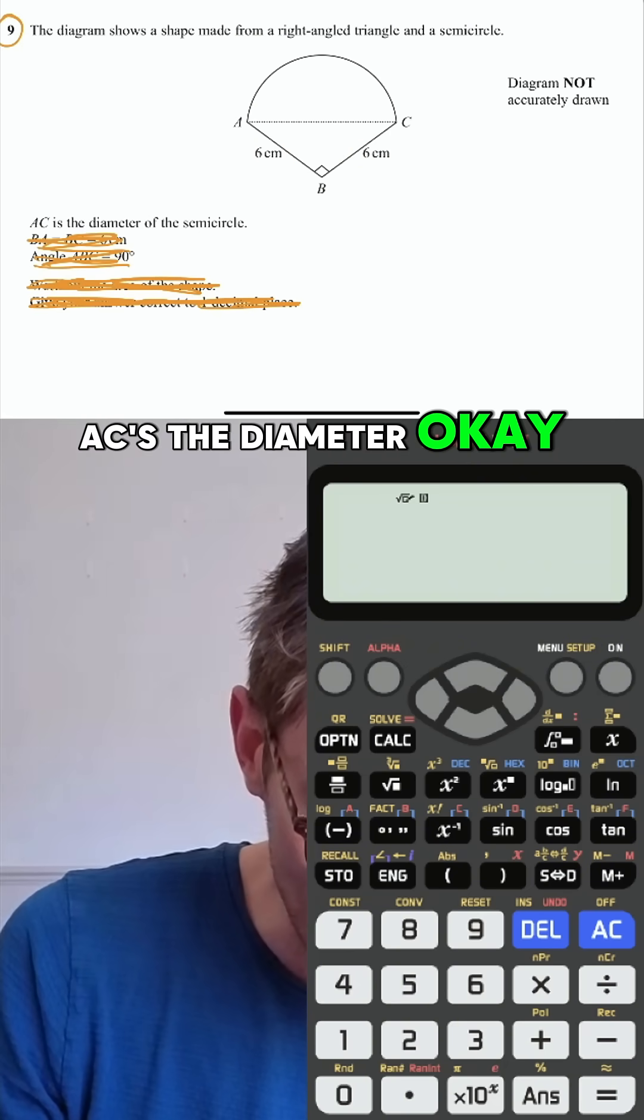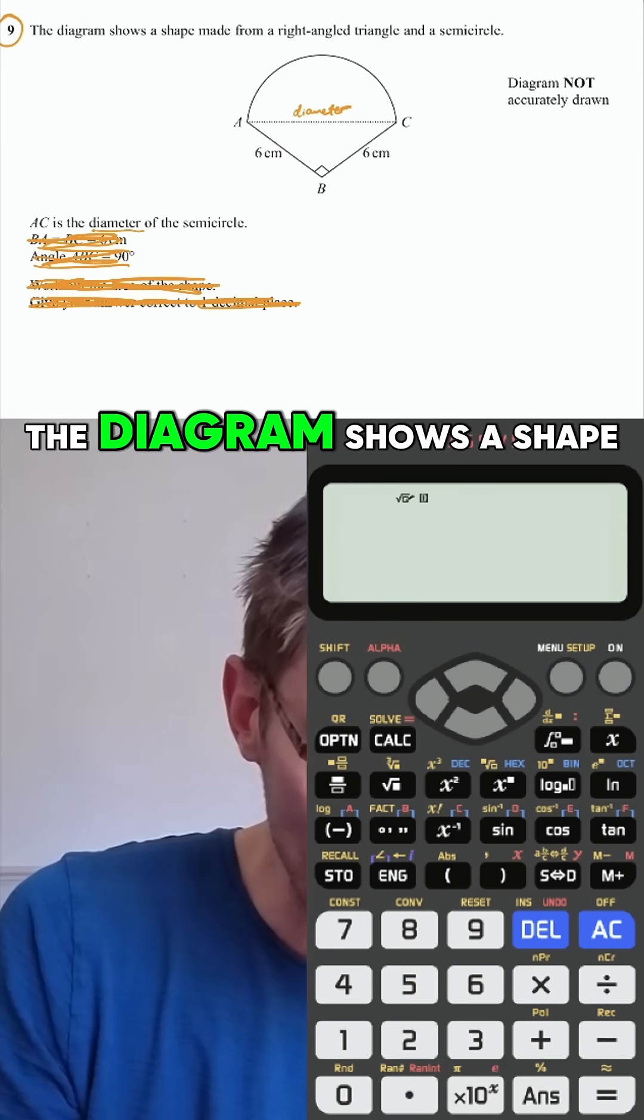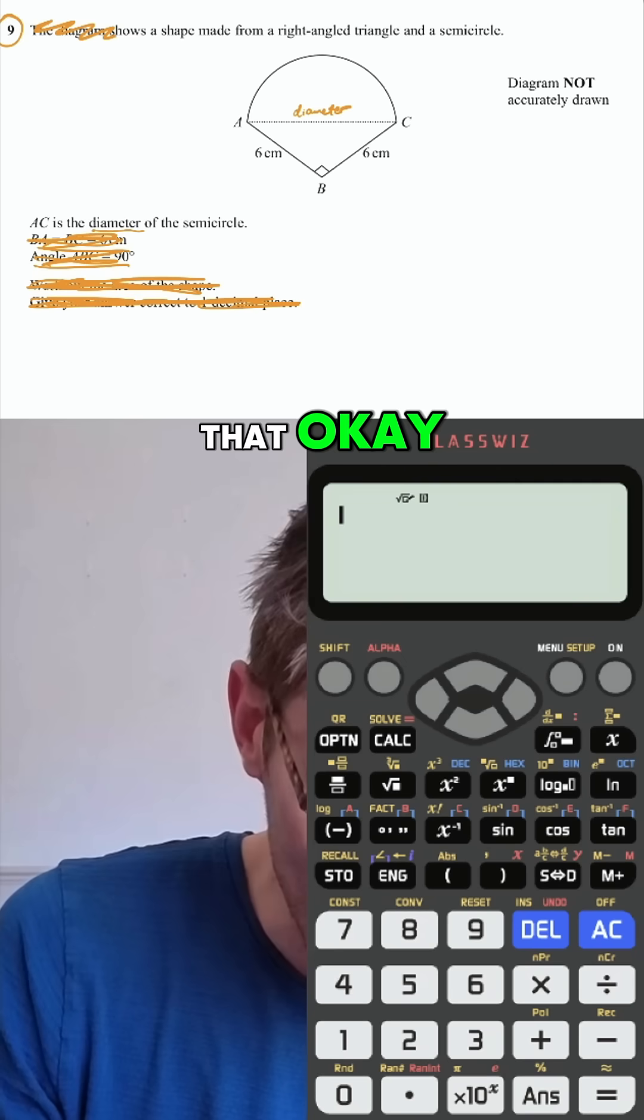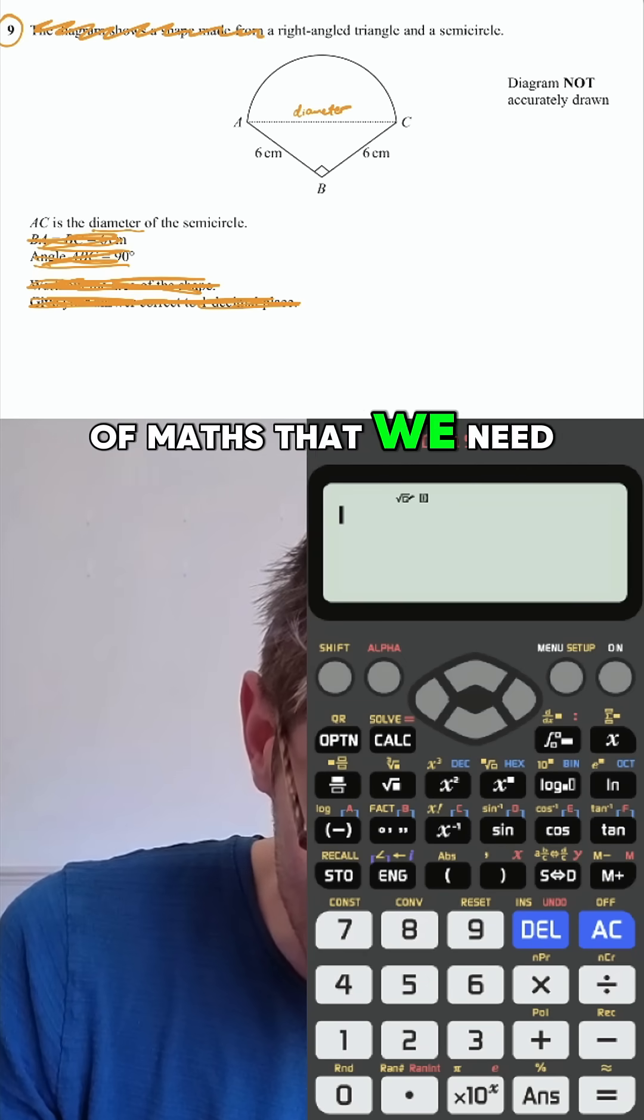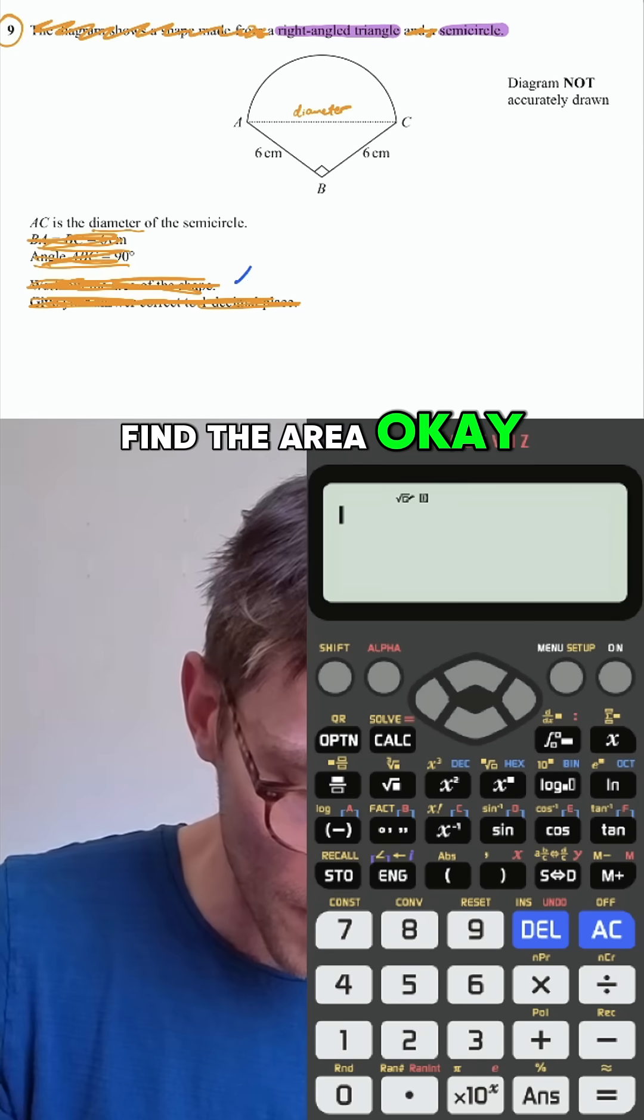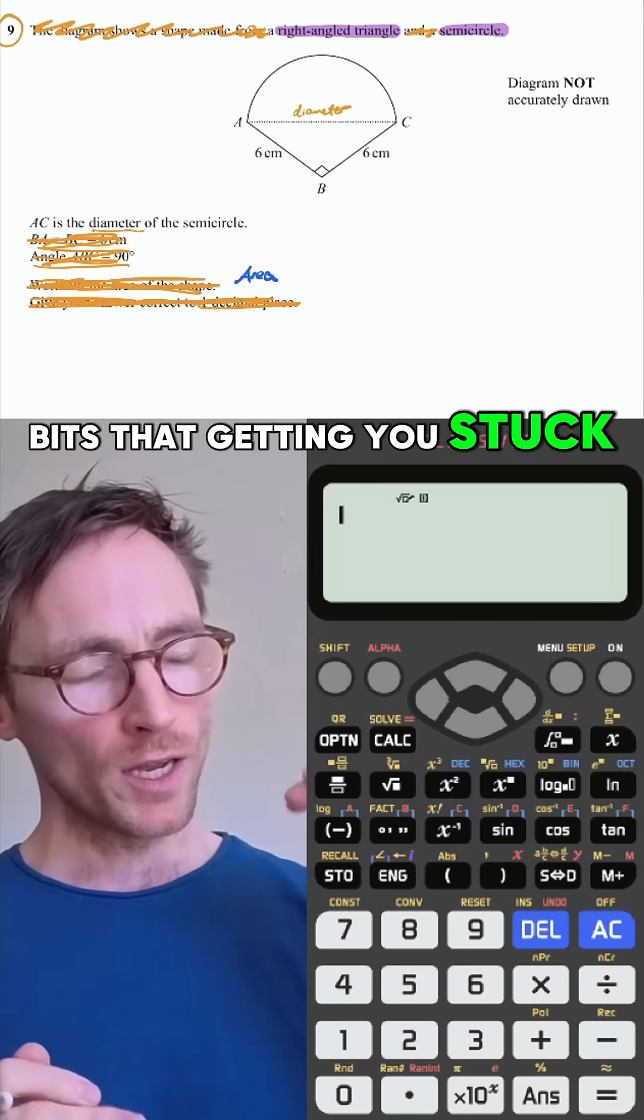AC is the diameter. That is a maths word. The diagram shows a shape made from a... No, boring. We don't need that. This is the only bit of math that we need. Right angle, triangle, semicircle. And the question is asking area. Find that area. Step one is ignore the bits that are getting you stuck.